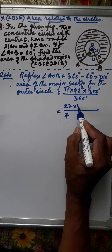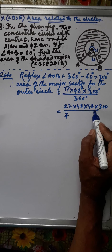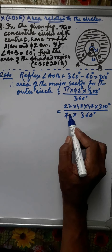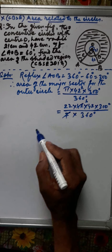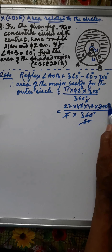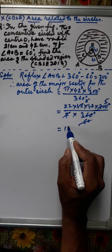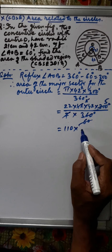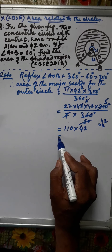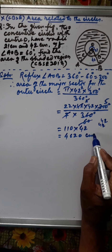Calculating: 22/7 into 42 into 42, with 300/360. This gives us 110 into 42 into 42, which equals 4620 centimeters square. This is the area of the major sector for the outer circle.